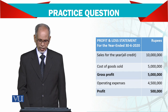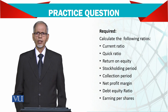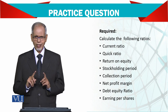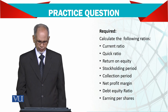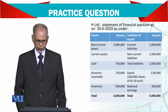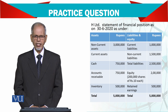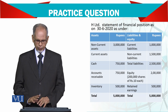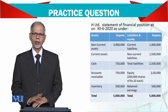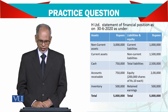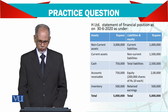Now the ratios we need to calculate. Number one: the current ratio. Let us see what our current assets and current liabilities are — we have to refer to the balance sheet. Current assets are 3 million and current liabilities are 1 million, so simply divide current assets by current liabilities.